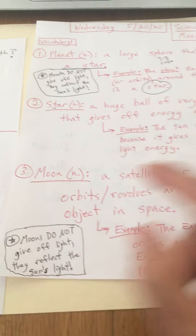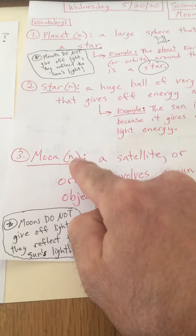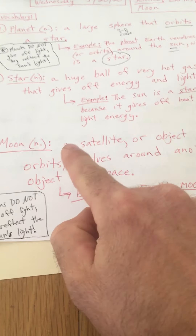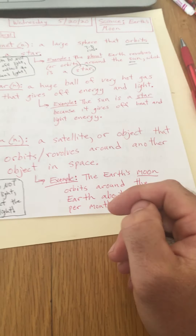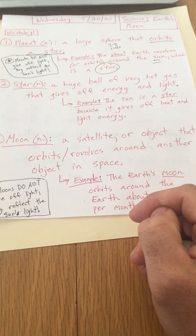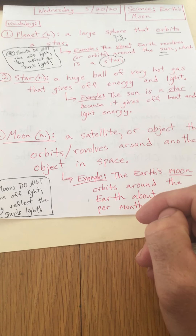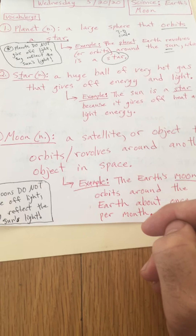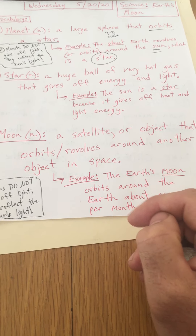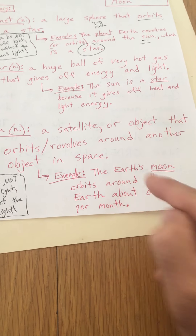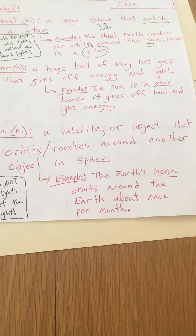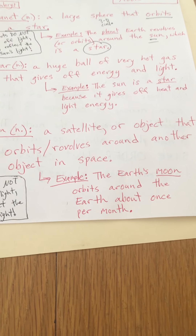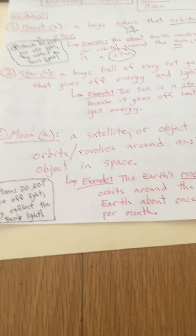Now let's move on to the word moon. A moon is a noun — it's a thing. It's a satellite or object that orbits, or revolves around, another object in space. For example, the Earth's moon orbits around the Earth about once per month.